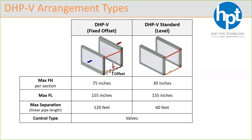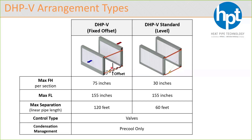For control type, we offer modulating valves, which is actually one of the bigger advantages for DHPVs compared to our other controllable wraparounds in Select Plus with level tubes. Depending on system size, it may be more cost effective to use a DHPV compared to a level controllable wraparound because at a certain point you get too many valves with level wraparounds, whereas DHPVs have far fewer circuits and valves. For condensation management, you're really just worried about the pre-cool condensing, so you'd want an extended drain pan or moisture eliminator downstream of the pre-cool. More information is available at heatpipe.com or by reaching out to us.